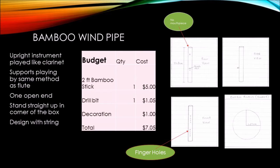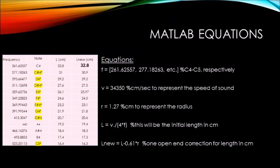We take into account the one opening at the end of the pipe. The length of the instrument will vary based on the mid-range tones required to play Ode to Joy. There is a max length of 32.8 cm, which is approximately 13 inches, to achieve a full octave with the required notes. The length was then corrected by subtracting 0.61 times the radius to achieve the corrected length supporting the frequencies calculated on the spreadsheet.